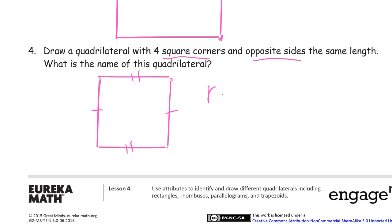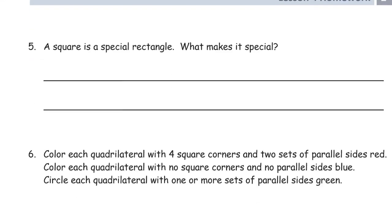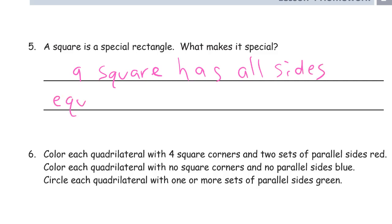I'm going to call this a rectangle, which kind of looks a little bit like a square — and it might be, but squares are a kind of rectangle, so rectangle works here. A square is a special rectangle. What makes it special is that a square has all sides equal to each other. Rectangles can be long and skinny, but squares always have all sides the same.